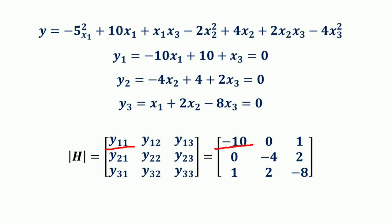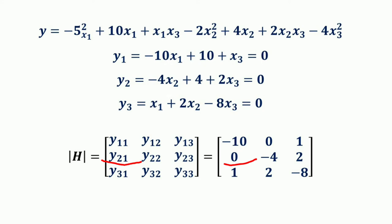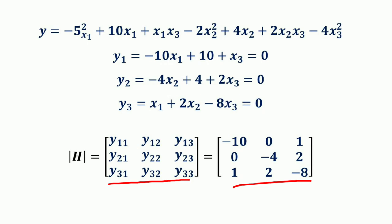Now we construct the higher order Hessian matrix. y11 (second order partial of y1 w.r.t. x1) = −10; y12 (w.r.t. x2) = 0 since there is no x2 term; y13 (w.r.t. x3) = 1. Similarly, y21 = 0 (no x1 term); y22 = −4; y23 = 2; y31 = 1; y32 = 2; and y33 = −8. This gives us the complete higher order Hessian matrix.